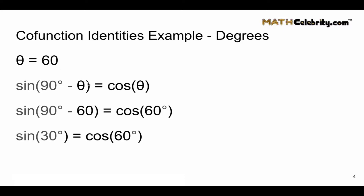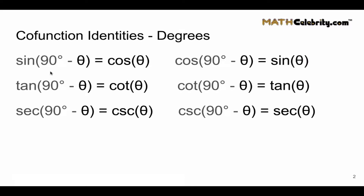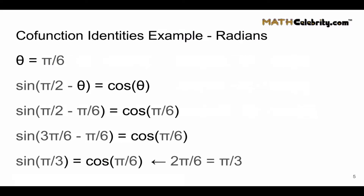We could also flip this using the other identity: cosine of 90 minus theta equals sine of theta. So it's important to remember those groupings. The result is sine of 30 equals cosine of 60 degrees, using our co-function identities. Now let's walk through an example with radians.